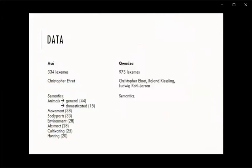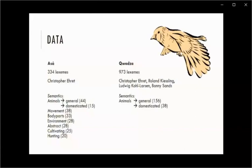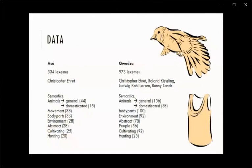The Kwadza data consists of 973 lexemes, including derivations, and this data is from Christopher Erit, Roland Giesling, and Ludwig Kohl-Larsen. The semantic domains are again a large group of general terms for animals and wild animals, like the weaver bird, some terms for domesticated animals, many words for body parts, and — just like in Asa — large categories for the environment, cultivating, and hunting. Kwadza has relatively more words referring to people or their status, and uniquely had terms for what people wear, like daliko, meaning women's upper garment.